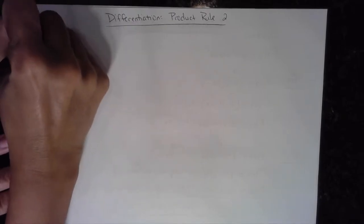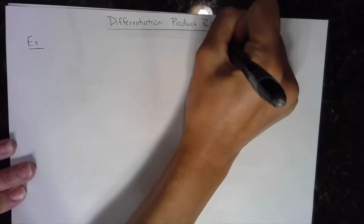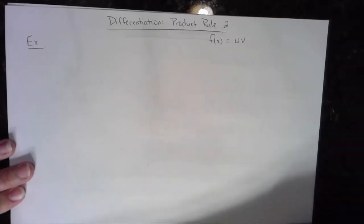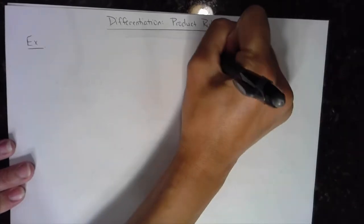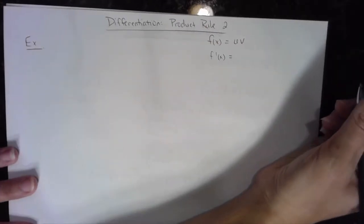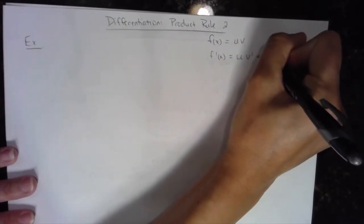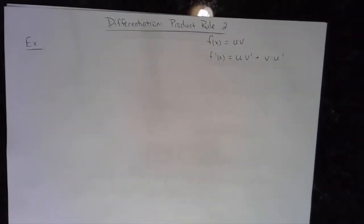So my first example — just for reference: if my function is the product of u times v, then my first derivative is equal to the first times the derivative of the second, plus the second times the derivative of the first. Every time we take a derivative using the product rule, we're going to say that out loud.